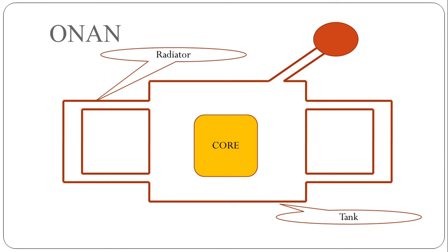Here is the transformer — these are the radiators, this is the transformer tank, and this is the core. The tank is filled with transformer oil and the core and windings are immersed inside it. When the transformer is under loaded condition, heat is produced inside the core and windings due to the heating effect of electric current. This heat is transferred from windings to the transformer oil by convection.